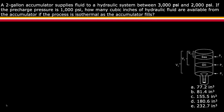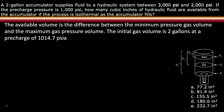A two-gallon accumulator supplies fluid to a hydraulic system between 3,000 psi and 2,000 psi. If the pre-charge pressure is 1,000 psi, how many cubic inches of hydraulic fluid are available from the accumulator if the process is isothermal as the accumulator fills? Note: the available volume is the difference between the minimum pressure gas volume and the maximum pressure gas volume.